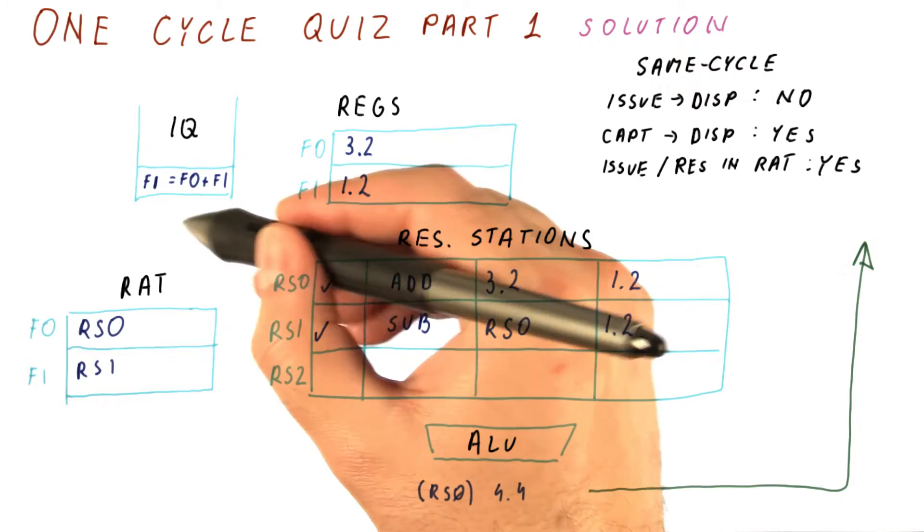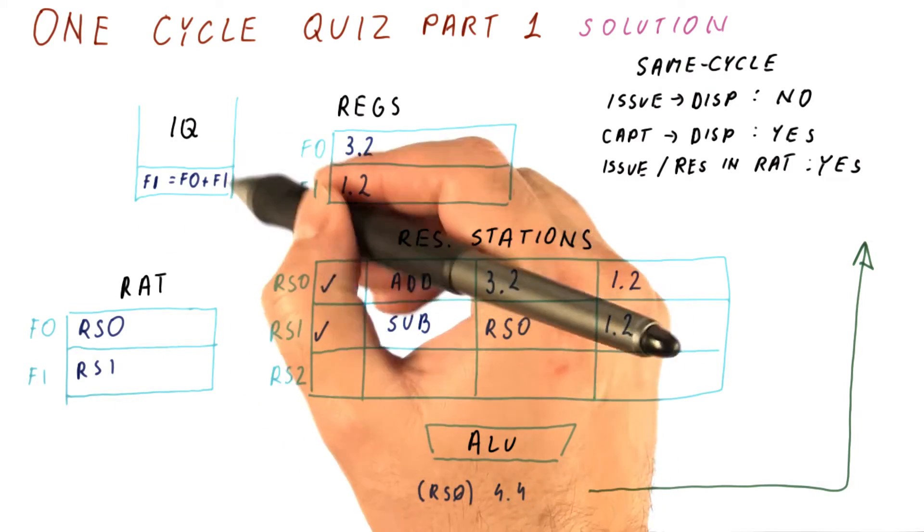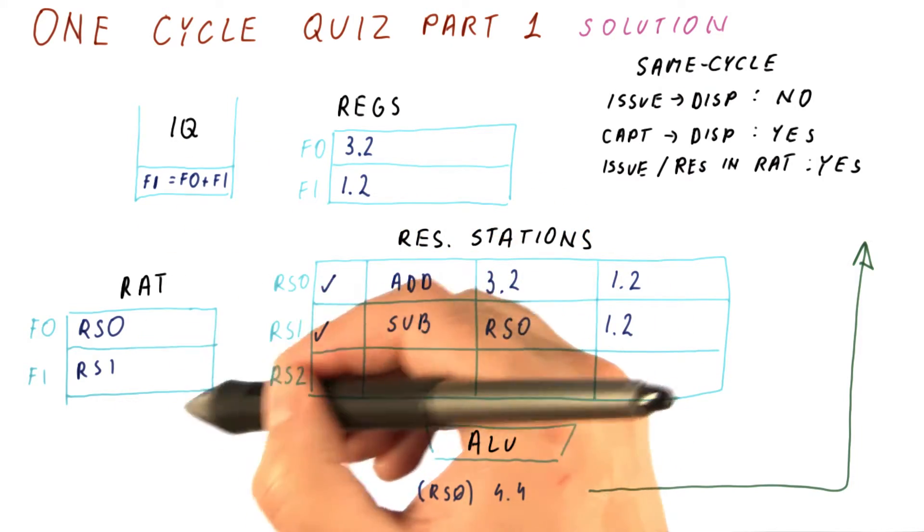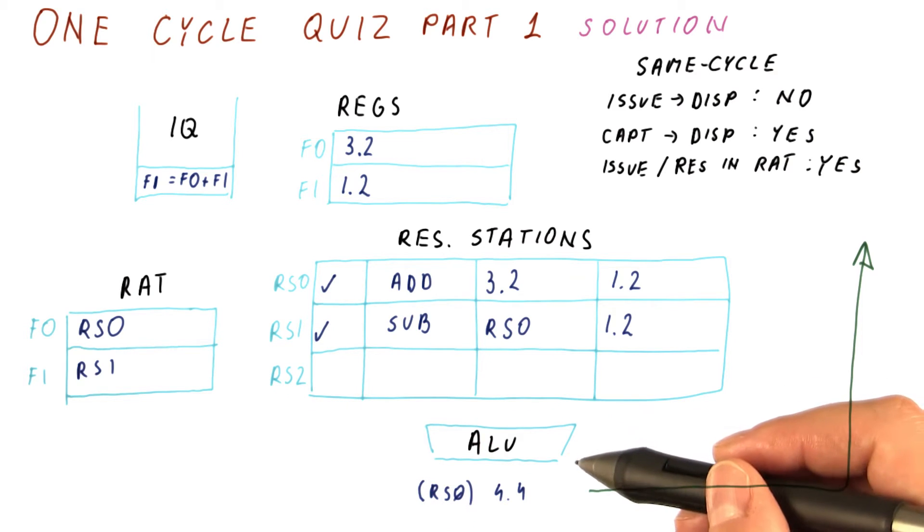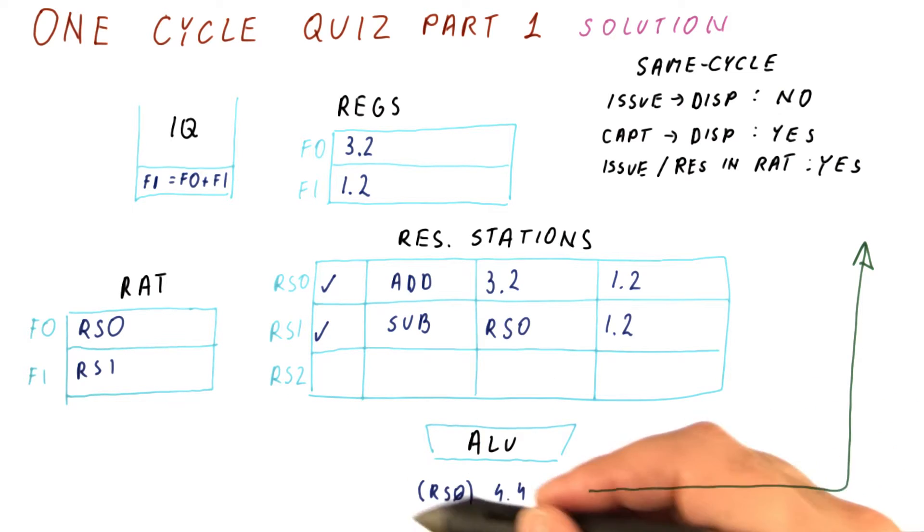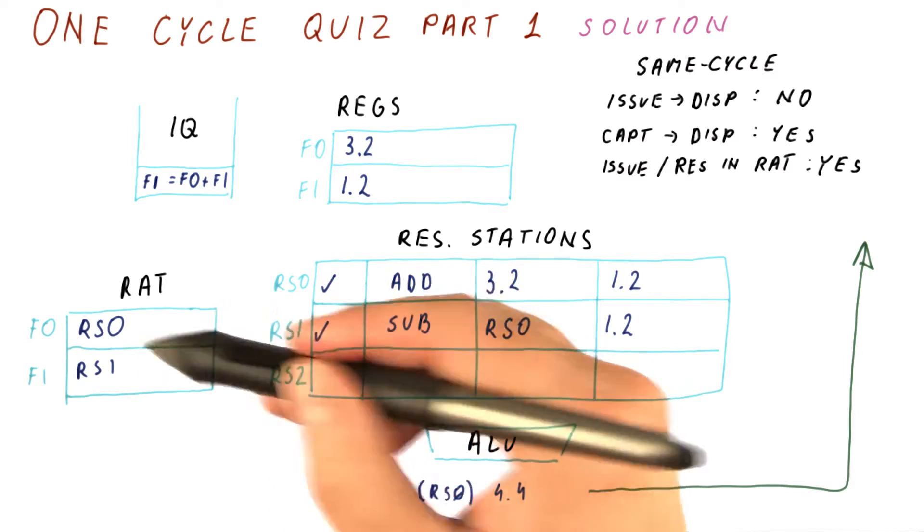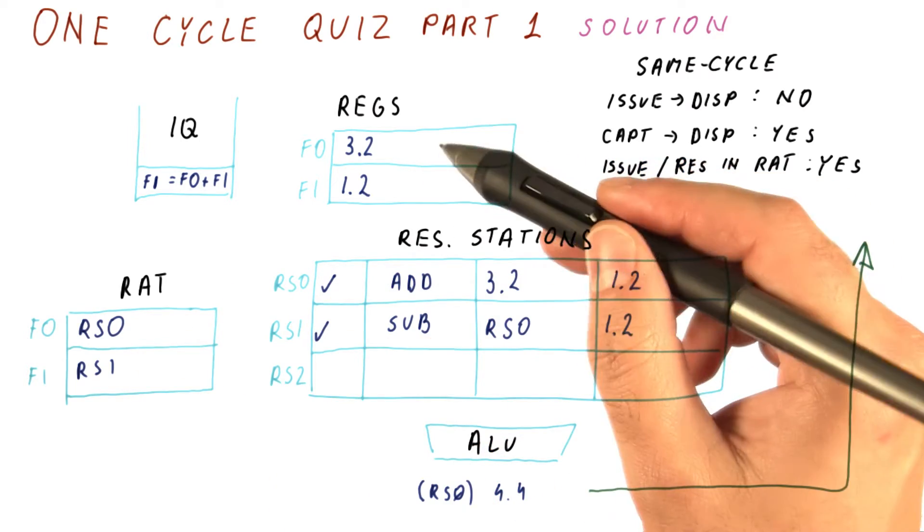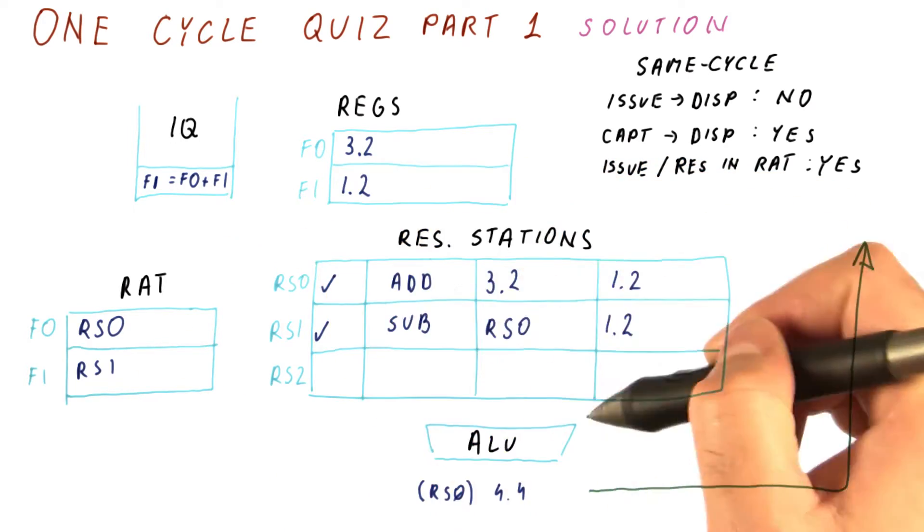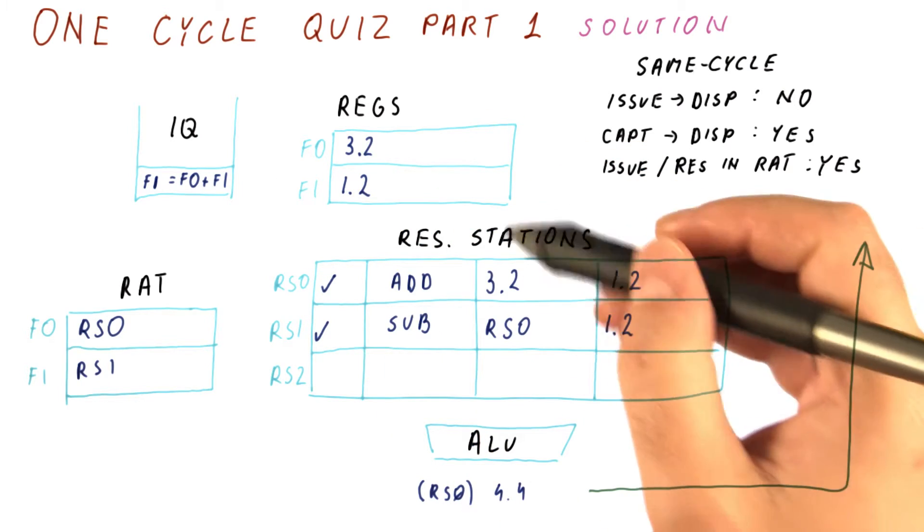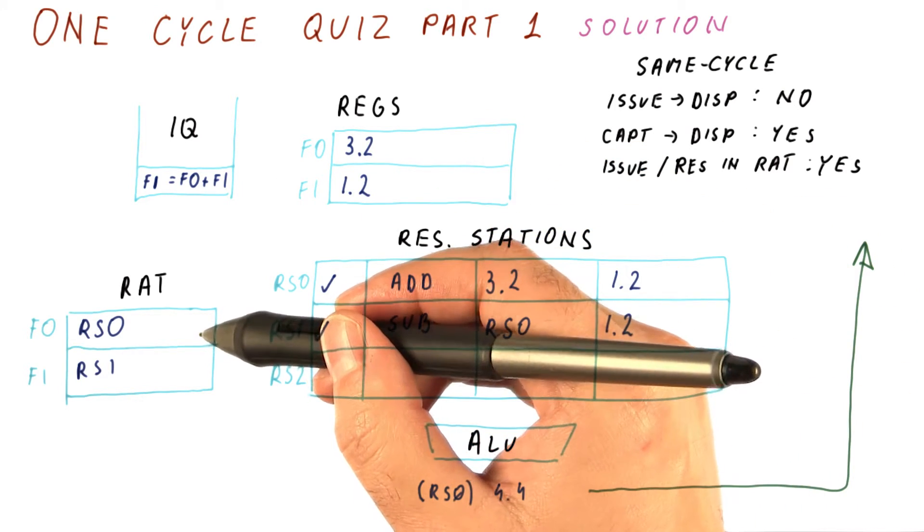One of the things that happens is we will try to issue this instruction that might update the RAT. Another thing that we need to consider is that this instruction will broadcast its result, and that might also update the RAT and write to a register. We can do this in either order, but we have to figure out if they update the same thing, what happens.